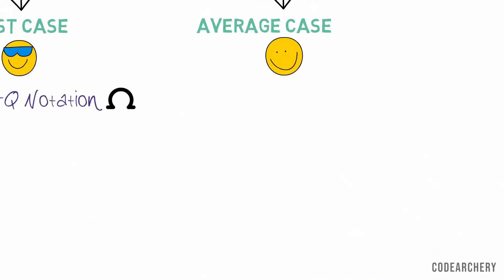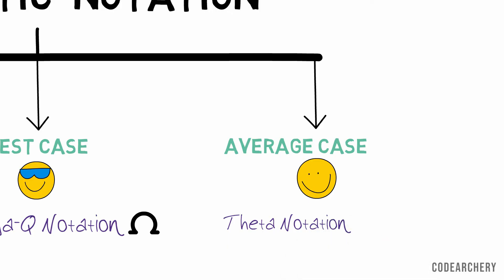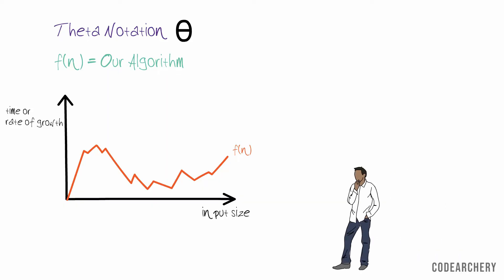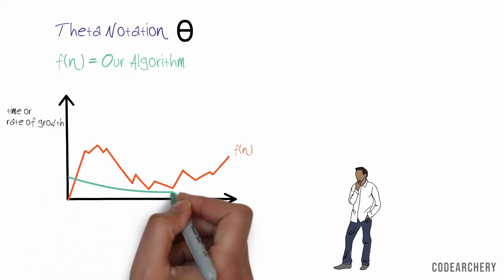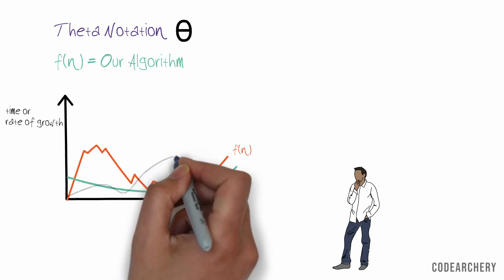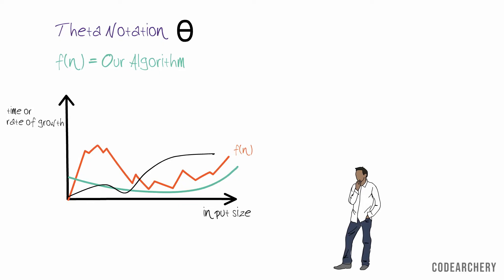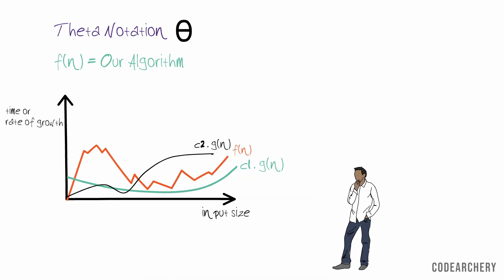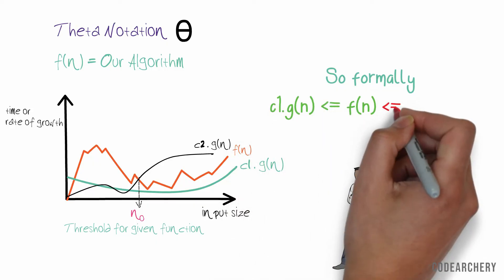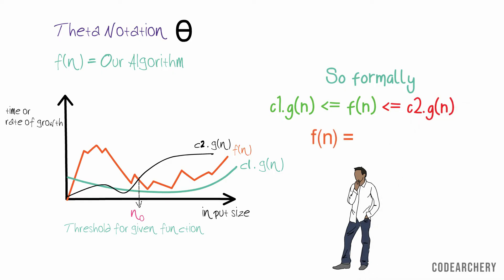Now let's see our final case, that is average case. We denote average case with Theta. So again, f(n) is our function and we have plotted the graph. Now for worst case, we have used upper bound and for the best case, we have used lower bound. But now for average case, what do we do? For average case, we try to find a function which can upper bound it and lower bound it as well. So let's say g(n) is the function and c₁ times g(n) is the lower bound for f(n) and c₂ times g(n) is the upper bound for f(n). So formally, when c₁ times g(n) is less than f(n) and c₂ times g(n) is greater than f(n), then f(n) is Theta of g(n).